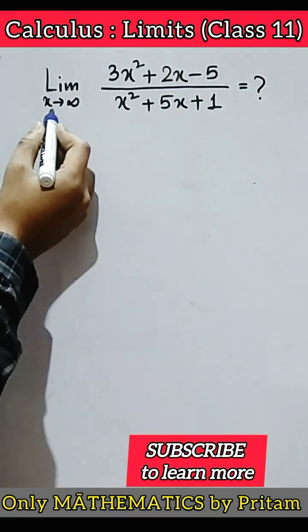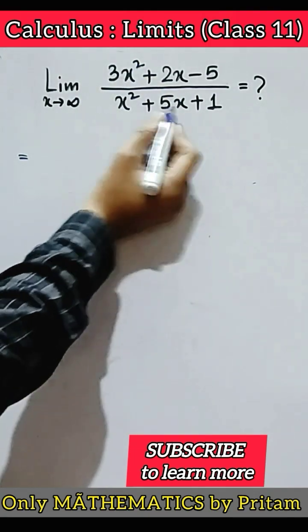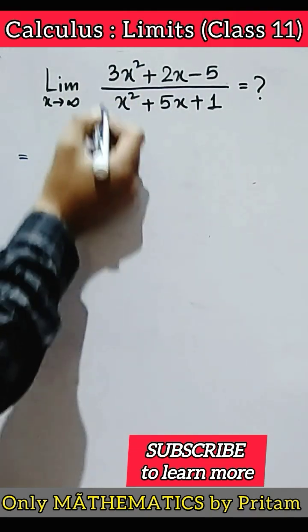So we will divide numerator and denominator by highest power of x. Here highest power is 2. So we will divide both the parts by x square.